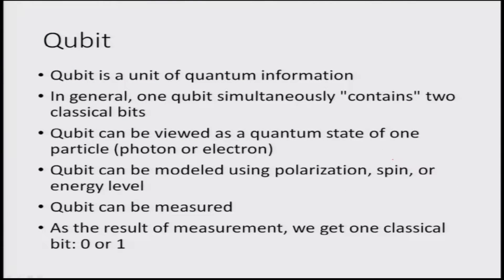The qubit is the unit of quantum information in quantum computing, and in general one qubit can simultaneously contain two classical bits. Qubits can be viewed as the quantum state of one particle level, say the photon or the electron, and the qubit can be modeled using polarization, spin, or energy level — whichever are the quantized properties of the system. The qubit can be measured; however, once measured, it is destroyed.